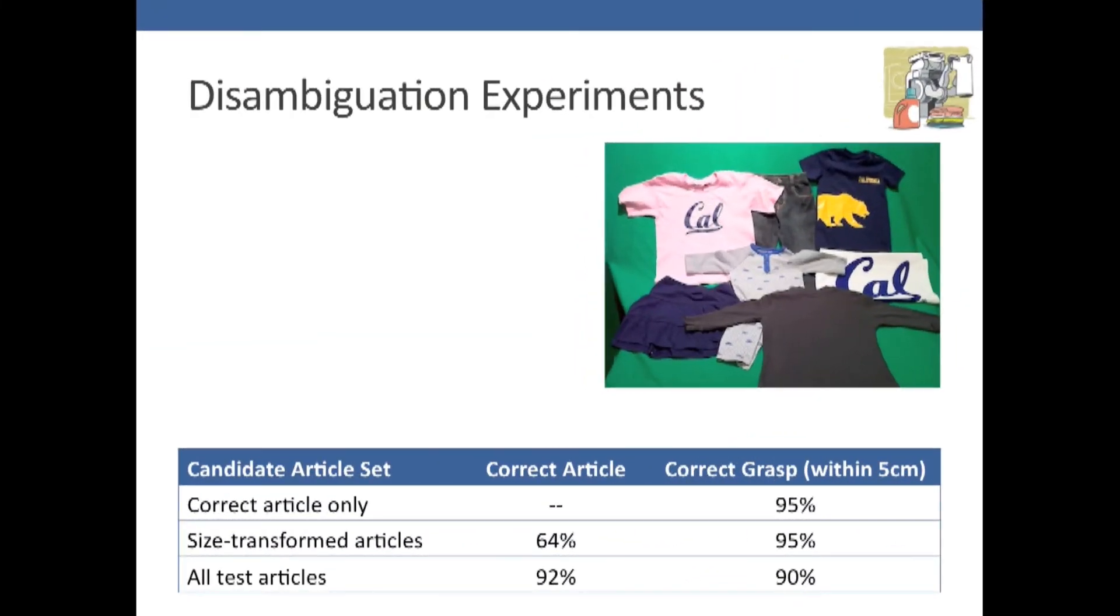We ran some disambiguation experiments to judge how well the first phase worked. There's three candidate article sets that we used. The first included only the correct article. The goal of this test was to see how well it did at estimating configuration if it already knew what the article was. We see it did pretty well - 95% of the time, it would get the correct grasp within five centimeters.